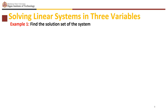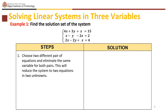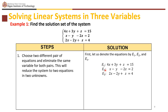The first example is to find the solution set of the system: 4x plus 3y plus z equals 15, x minus y minus 2z equals 2, and 2x minus 2y plus z equals 4. Let us denote the equations as e sub 1, e sub 2, and e sub 3. So e sub 1 is 4x plus 3y plus z equals 15, e sub 2 is x minus y minus 2z equals 2, and e sub 3 is 2x minus 2y plus z equals 4.